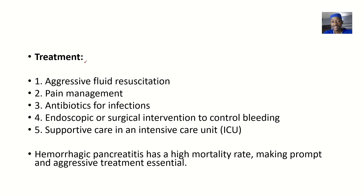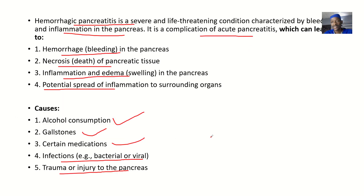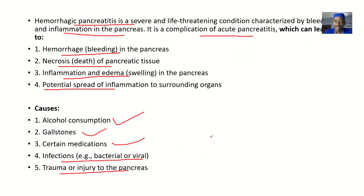What are the possible treatments for this disease condition? There's aggressive fluid resuscitation, then pain management — you could give some doses of pain relievers. You could also give antibiotics if there are possible infections. You could do endoscopic or surgical intervention to control the bleeding. Then you should place the patient in intensive care, because this is something you need to keep a close eye on. So this is hemorrhagic pancreatitis — from the definition to the complications, the causes, symptoms, diagnosis, and possible treatment.